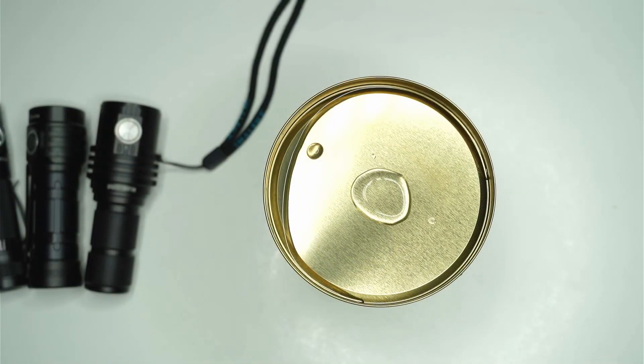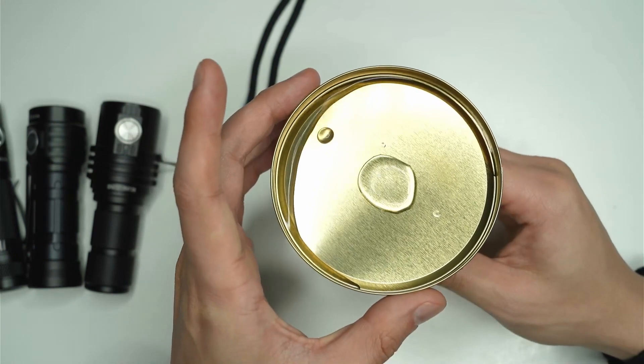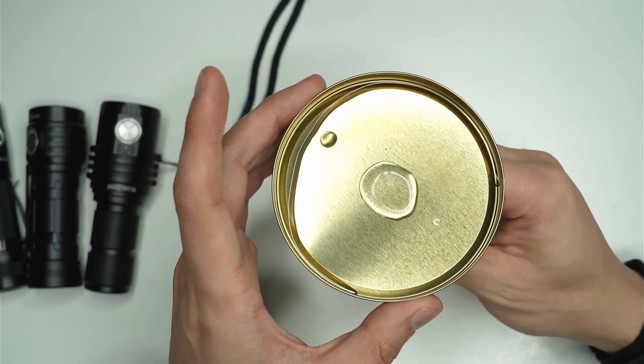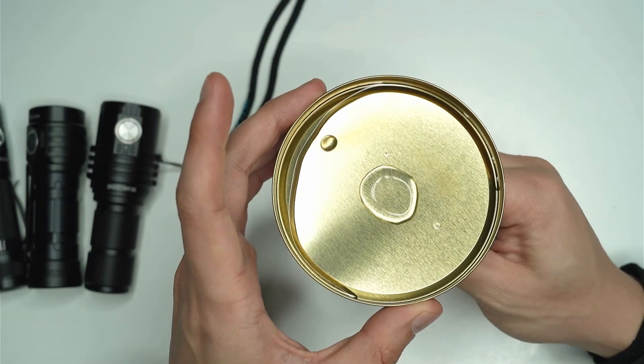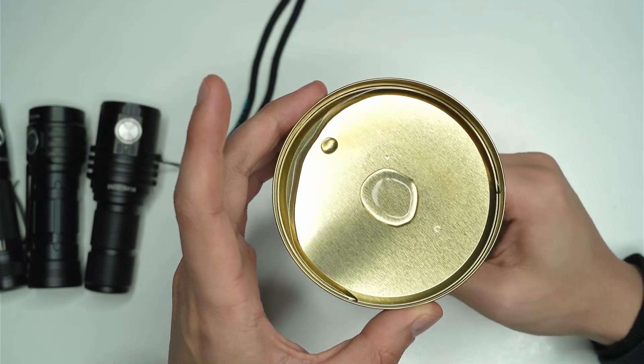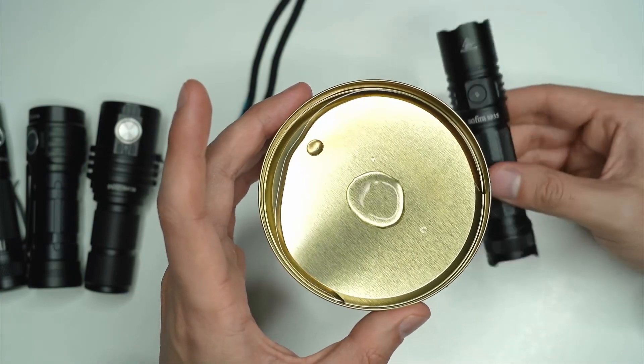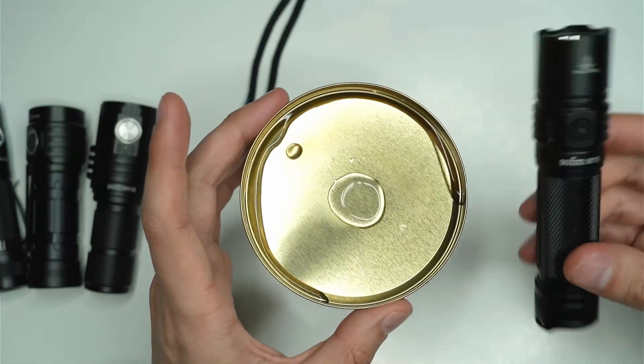So again, as expected, 2,000 lumens—it's pretty hot under the bezel of the flashlight. I'll just switch that off. Also just keep in mind this Sofirn also has a Samsung 40T in there.